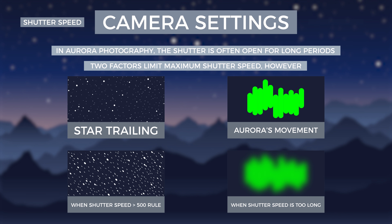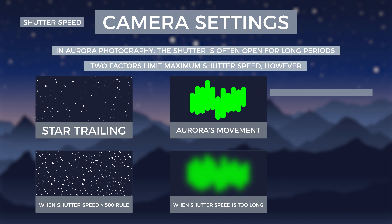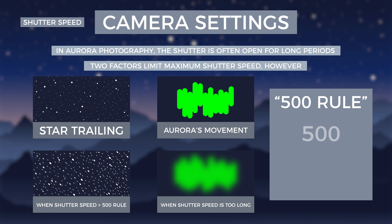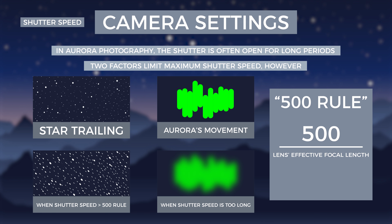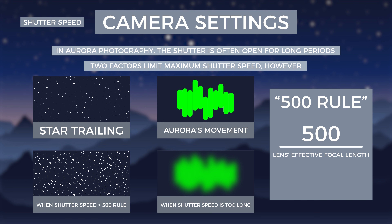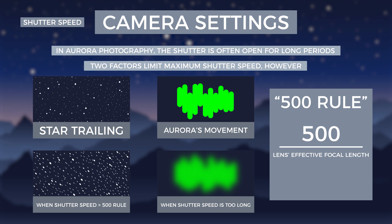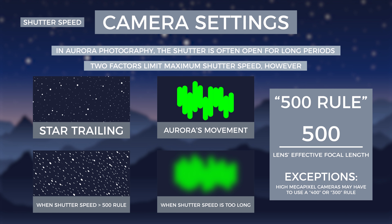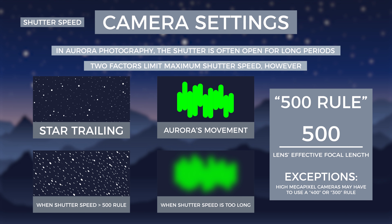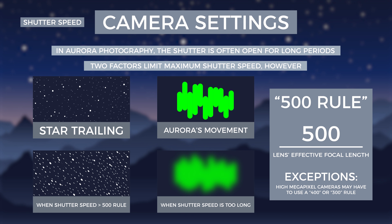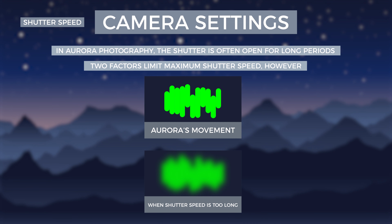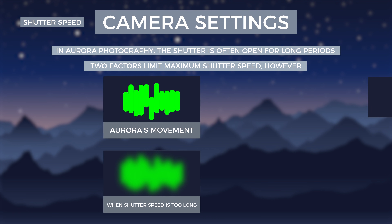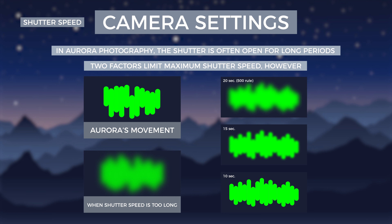To find the longest shutter speed without experiencing star trailing, we use the 500 rule — a formula which takes 500 divided by the focal length of the lens, which, if you are using a crop sensor camera, will need to be multiplied by a scaler to get your shutter speed in seconds. While the 500 rule works for most situations, high-megapixel cameras may require a 400 or 300 rule instead. Under intense auroral activity, shutter speeds calculated using these rules may blur complex and quickly shifting structures, leaving the aurora as a blob. Decreasing shutter speed can help preserve detail, making the aurora more defined.